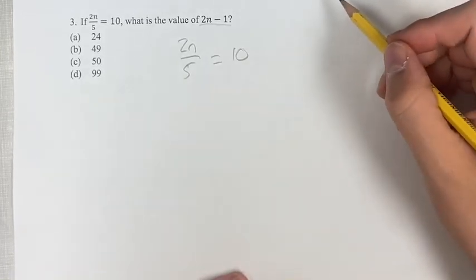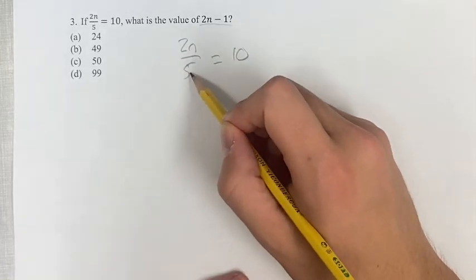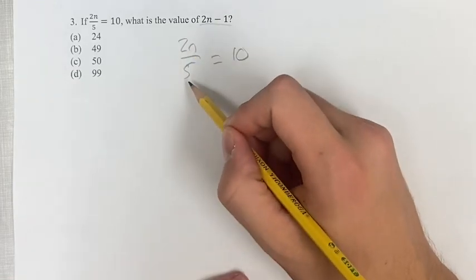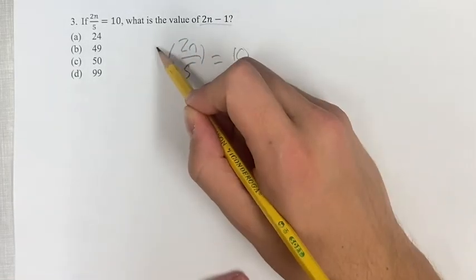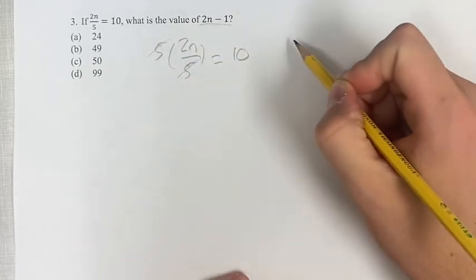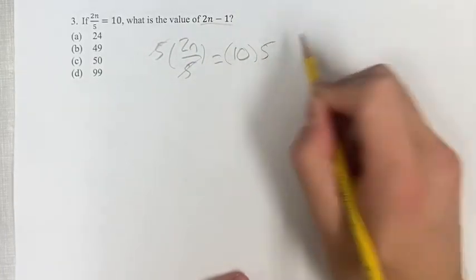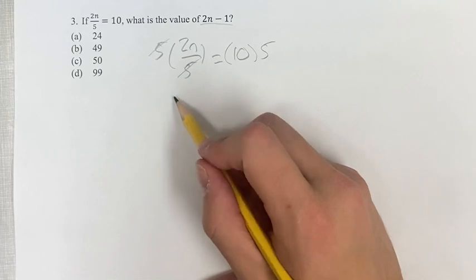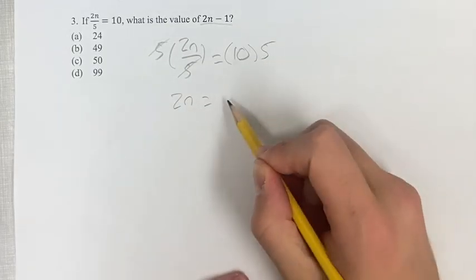So the first thing we can notice is that if we get rid of this denominator, then we'll just have 2n on its own. So we can multiply this by 5, and then these will cancel. Of course, you have to do it to both sides to keep things equal. That gives you 2n is equal to 10 times 5, which is equal to 50.